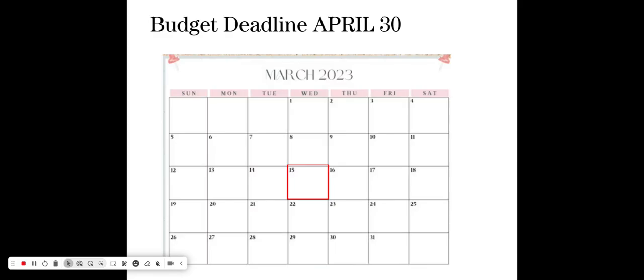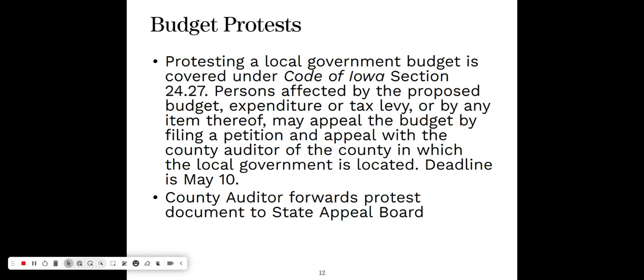Your budget deadline was changed a couple of years ago to April 30th — it used to be March 15th for a long time. Regarding budget protests: citizens in your area can protest your budget. Protests are covered under Code of Iowa Section 24.27. After you adopt your budget locally, people in your area that are affected can circulate a petition and submit it to the county auditor. The number of signatures required varies depending on how many people voted in that county at the last governor's election, but it is no less than 10.